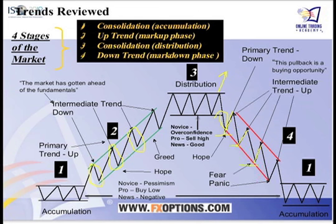Eventually some of those buyers get panicked out or get margin calls and are forced out. In the uptrend, when we have pullbacks, the market has gotten ahead of itself — it's ahead of the fundamentals — and everybody doubts the uptrend. But over here in the downtrend, a pullback is called a buying opportunity by everyone. Unfortunately, if it is a stage four decline, it's not a buying opportunity, and you shouldn't be buying these — or if you are, you should be taking your profits very quickly.